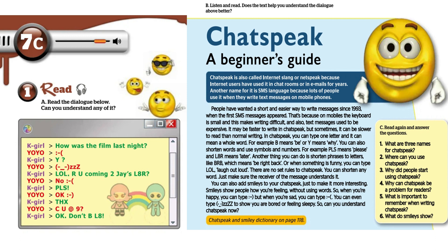Another thing you can do is shorten phrases to letters, like 'brb' which means 'be right back', or when something is funny you can type 'lol' — laugh out loud. There are no set rules to chat speak. You can shorten any word, just make sure the receiver of the message understands it.